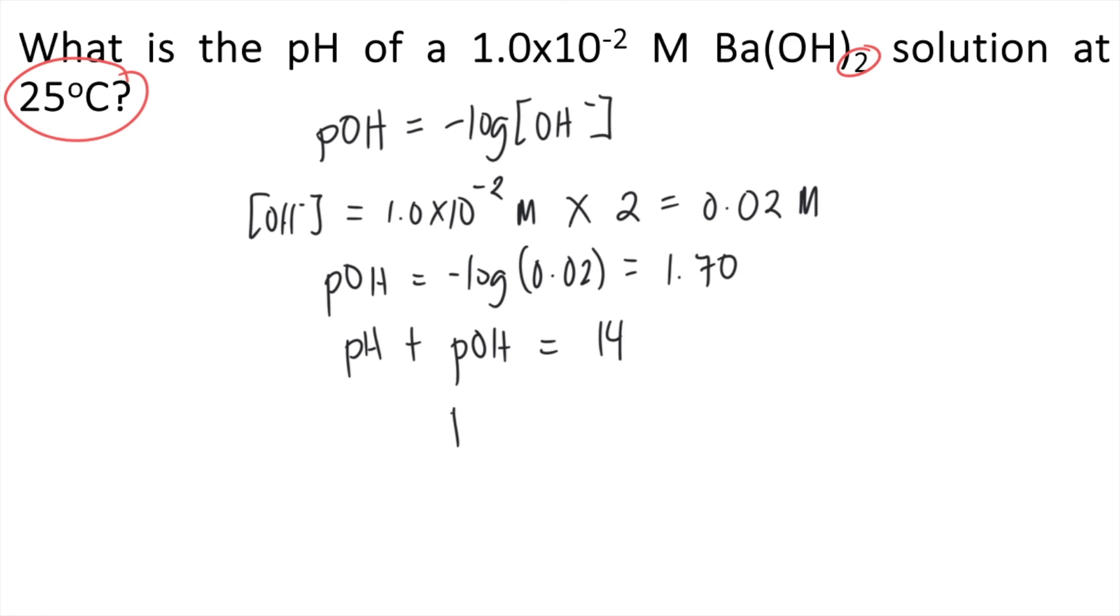So if you want to solve pH, the pH is equal to 14 minus POH. So the pH is equal to 14 minus the POH we solved, which is 1.70. So that is equal to 12.30. The pH and the answer to this question is 12.30.